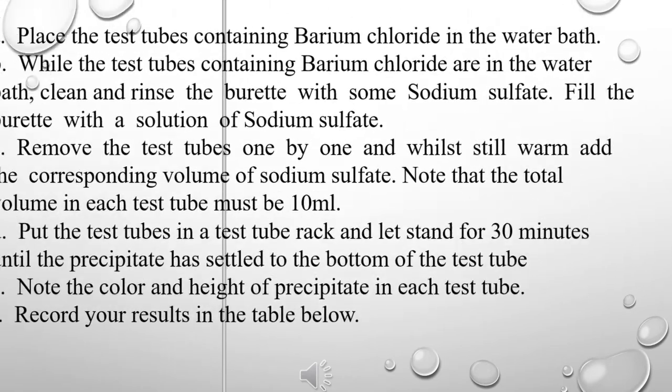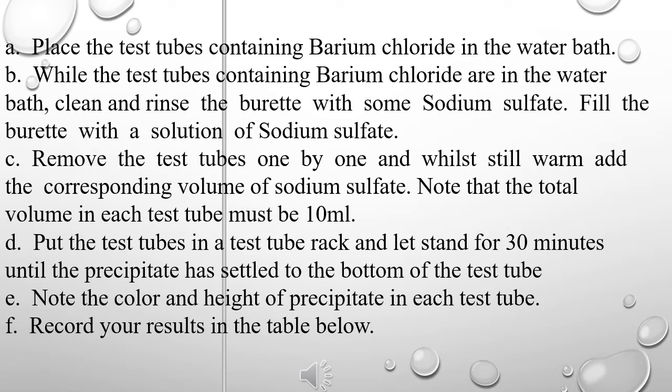Procedure 2 A: Place the test tubes containing Barium Chloride in the water bath. Clean and rinse the burette with some Sodium Sulfate, then fill the burette with a solution of Sodium Sulfate. C: Remove the test tubes one by one and, whilst still warm, add the corresponding volume of Sodium Sulfate. Note that the total volume in each test tube must be 10 milliliters. D: Put the test tubes in a test tube rack and let stand for 30 minutes, until the precipitate has settled to the bottom of the test tube.